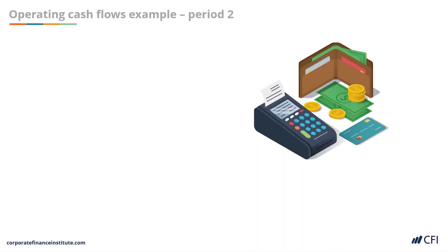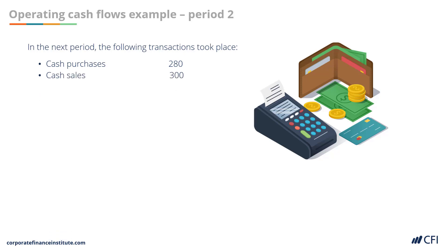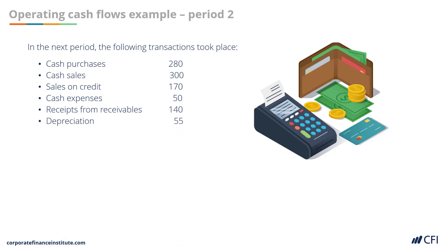Now let's look at a slightly more complicated period 2. The transactions that took place during the period are: cash purchases of $280,000, cash sales of $300,000, sales on credit of $170,000, cash expenses of $50,000, receipts from receivables of $140,000, depreciation of $55,000, and again there was no inventory left at the end of the period.